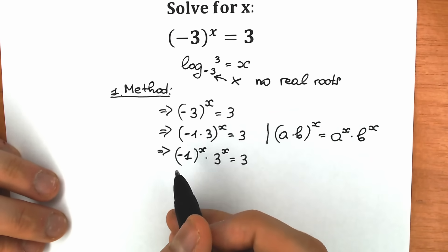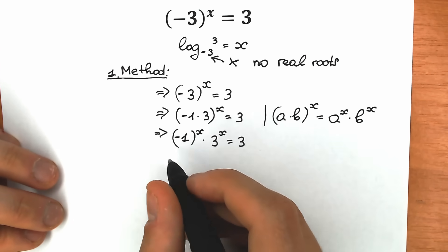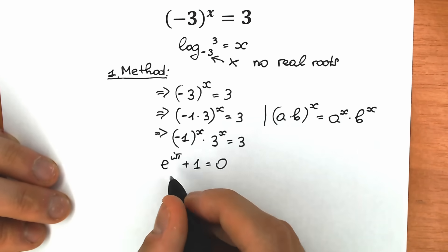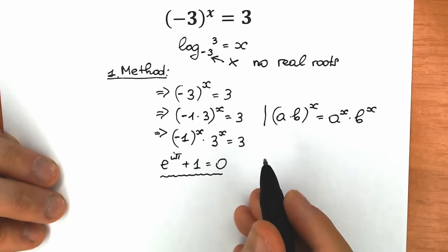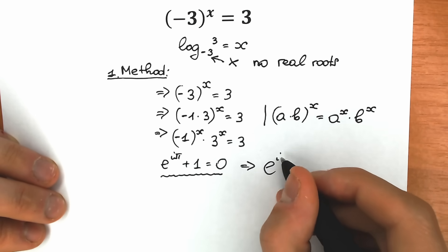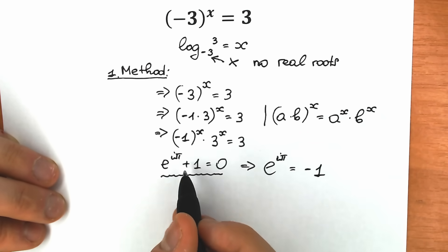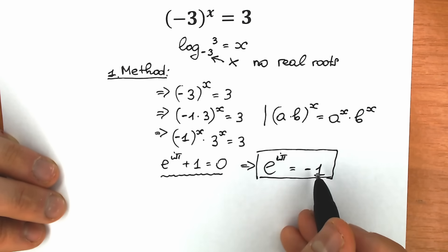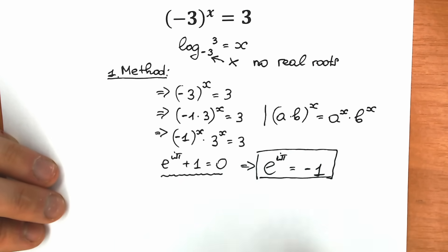Now let's look closely at minus 1 to the power x. There is a great identity in terms of complex numbers: e^(iπ) + 1 = 0, which means e^(iπ) = minus 1. So instead of minus 1, let's substitute e^(iπ).